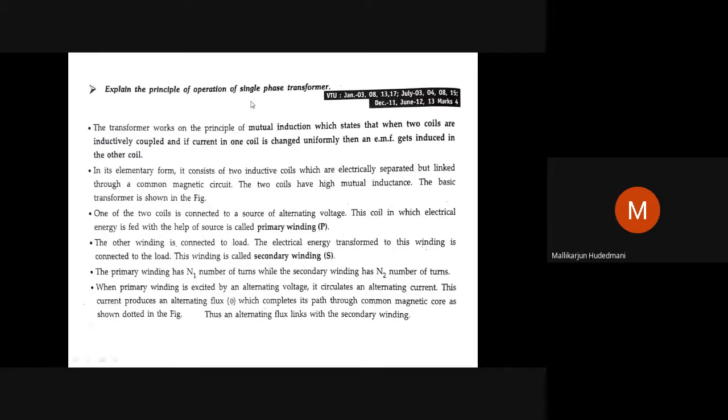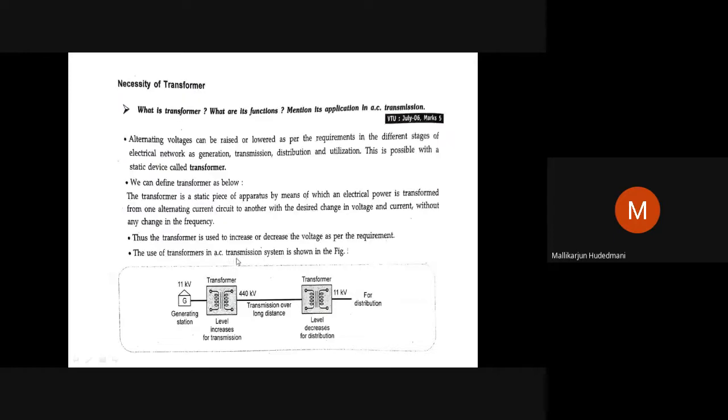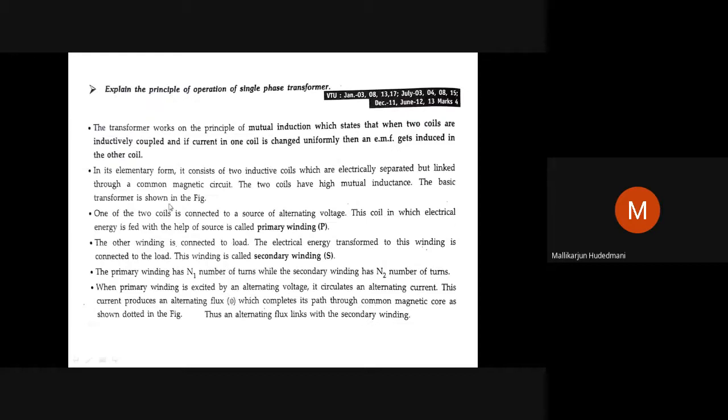You can explain the principle of single-phase transformer having two coils: primary and secondary. Primary is the one connected with the supply. Secondary is the one from which supply is taken out. N1, N2, V1, V2, like this I have mentioned here. The ratio comes here. You can see how many times this question has repeated in the exam.